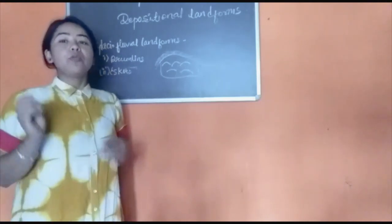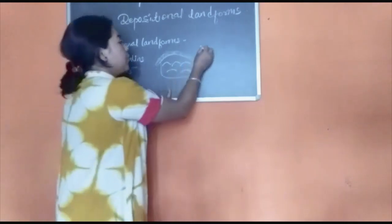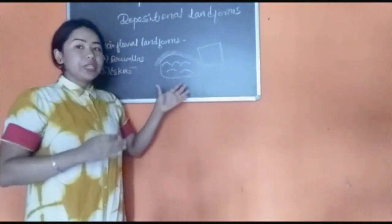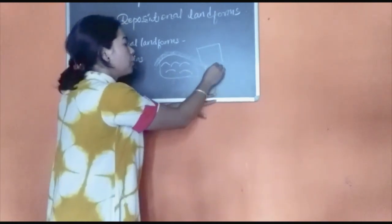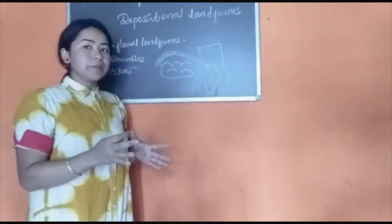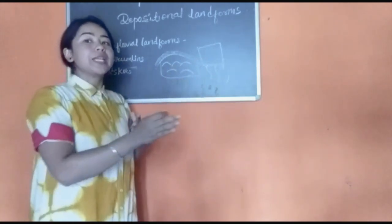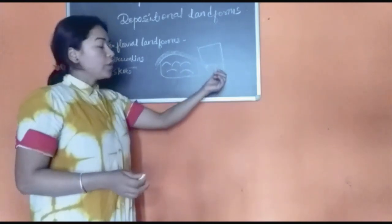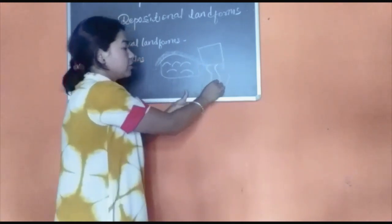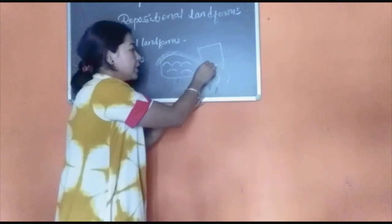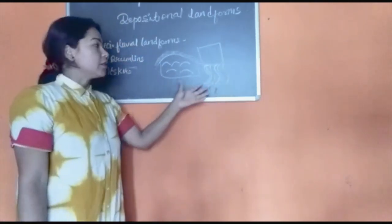Once the glacier reaches the snout it starts melting, and the meltwater forms small streams coming out from the main glacier. These streams don't move straight — they tend to curve. Along with the stream they carry sediments, and when the streams twist and turn, the sediments brought down by them also get deposited in the same curved manner, forming S-curves. This is how eskers are formed.